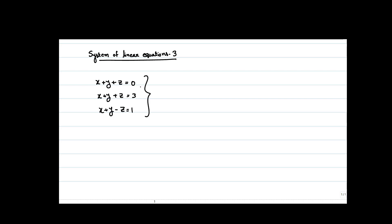Now, if we observe the first two equations alone — suppose there is some point (a, b, c) which is a solution of this system of linear equations, then (a, b, c) should satisfy all three equations. If (a, b, c) satisfies the first equation, we get a plus b plus c equal to 0. And if it satisfies the second equation, we get a plus b plus c equal to 3, which eventually gives us 0 equal to 3.